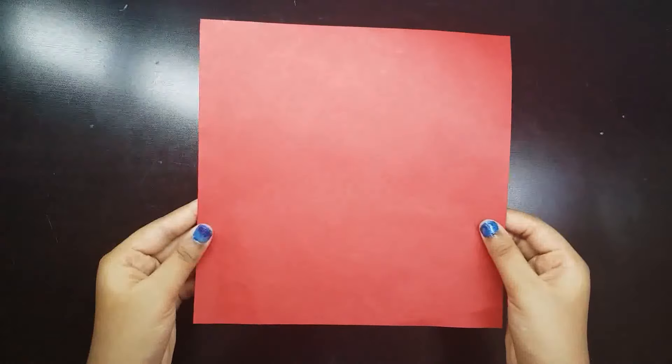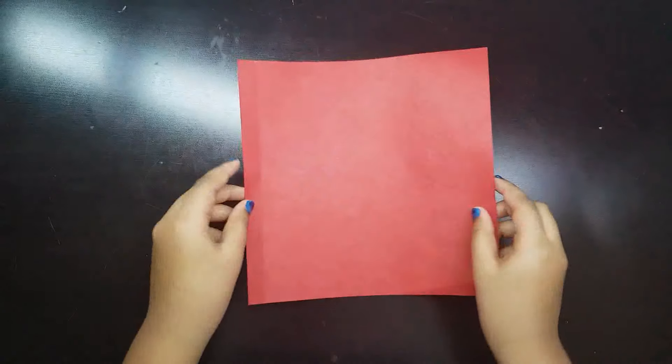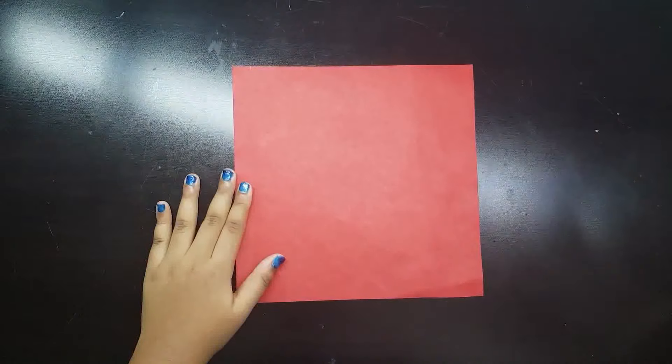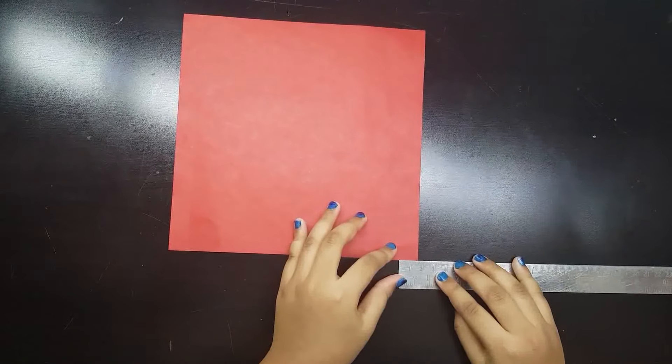Here I have taken a square paper measuring 20 x 20 cm. Measure and mark 1.5 cm on both sides of the paper.